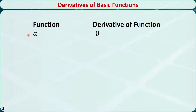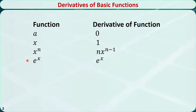The derivative of constant number a with respect to x is 0. The derivative of x with respect to x is 1. The derivative of x to the power of n is n times x to the power of n-1. The derivative of e to the power of x is just itself, where e is Euler's number, which is approximately 2.71828.